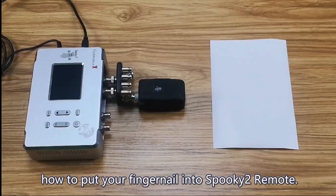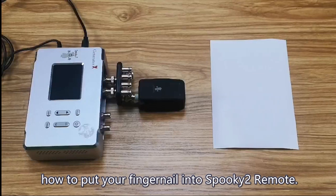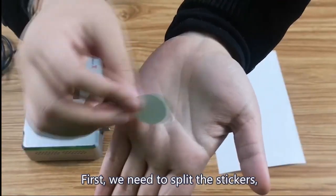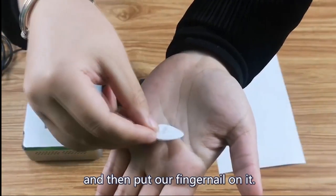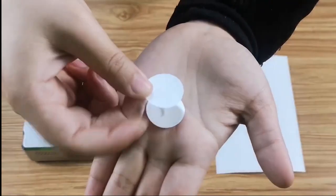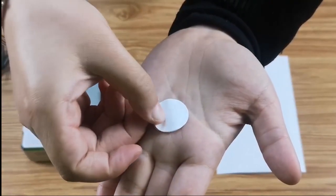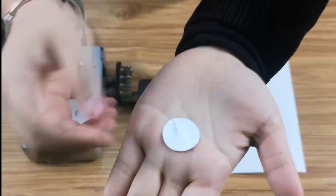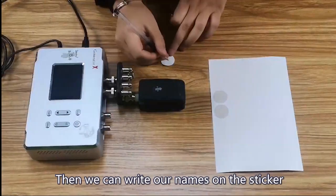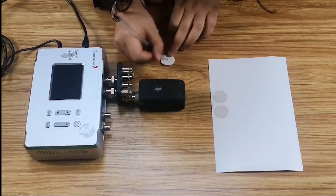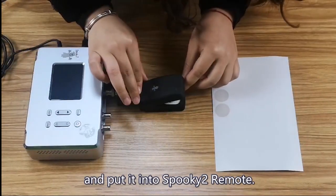Then, we will show you how to put your fingernail into Spooky2 Remote. First, we need to split the stickers, and then put our fingernail on it, and use another sticker to cover it. Then, we can write our names on the sticker, and put it into Spooky2 Remote.